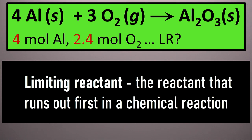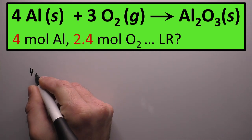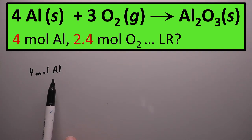The limiting reactant sets a limit on how much product I can make — in this case, the product is aluminum oxide. In order to find the limiting reactant, we need to figure out how much of one reactant is required to react completely with the other. You can start with either of these reactants — the aluminum or the oxygen — and you'll get to the right answer either way. So let's start with the aluminum. I'm going to write out my four moles of aluminum and find out how much oxygen is required to react completely with it.